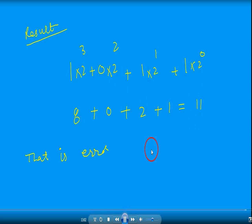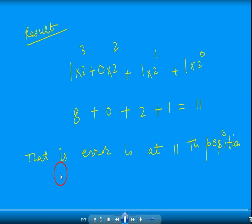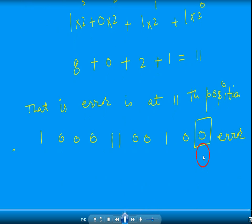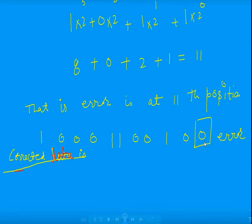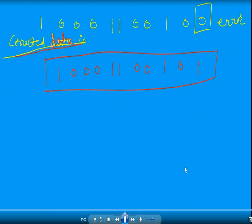The error is at the 11th position, which currently reads 0 and should be corrected to 1. This is how we locate the error position and correct it using Hamming Code.